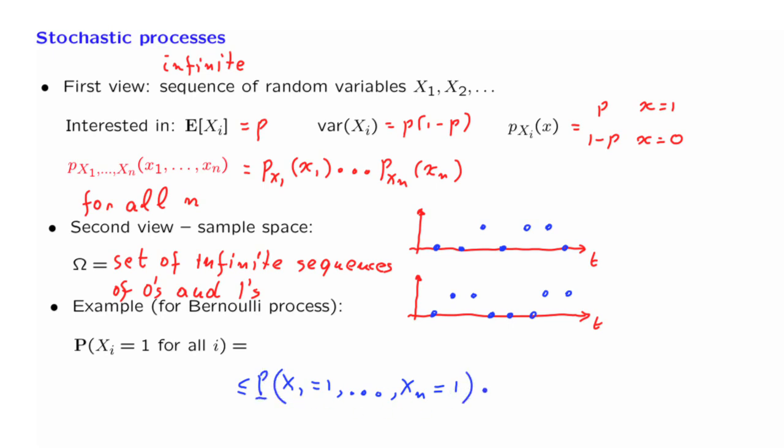Now, we know that this probability is equal to P to the n. And this inequality here is true for all n. No matter how large n we take, this quantity is smaller than that.